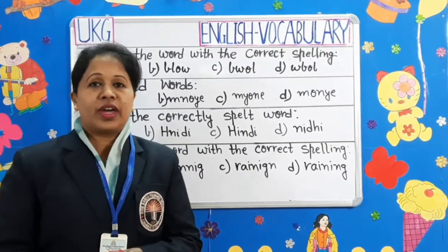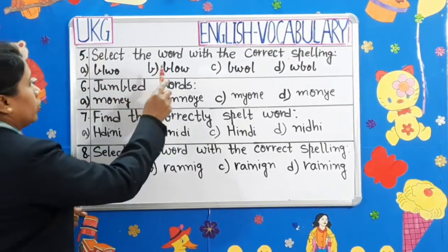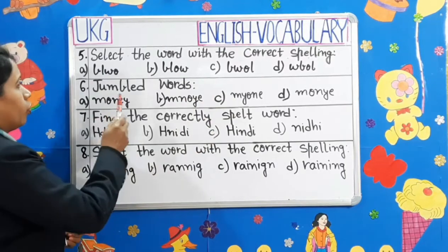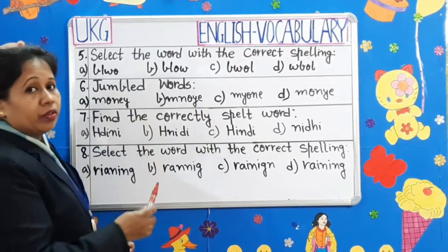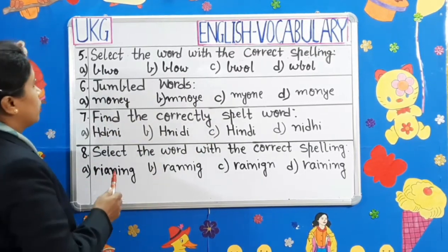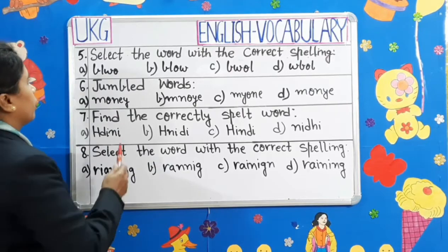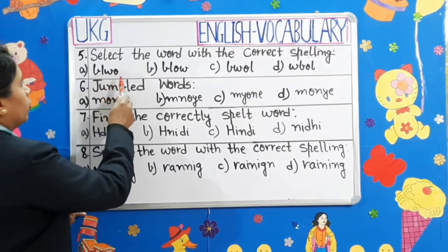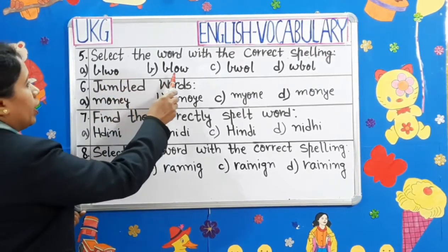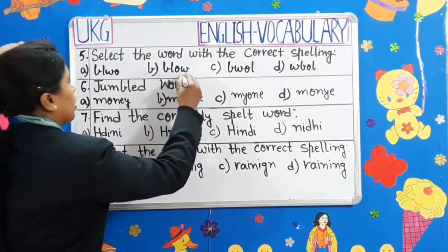Question 5: Select the word with the correct spelling. Children, four options are given. We have to see the correct spelling. B-L-W-O — it sounds wrong. B-L-O-W — yes, it is correct.